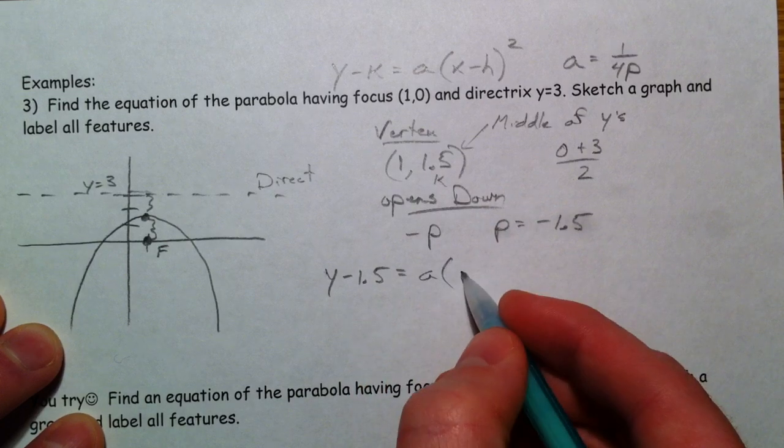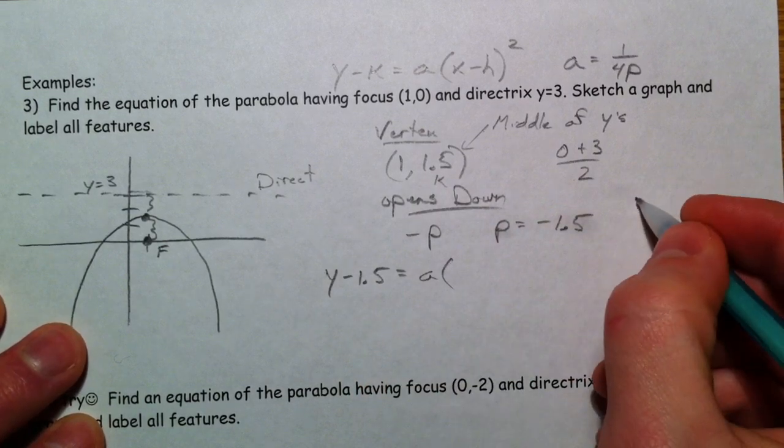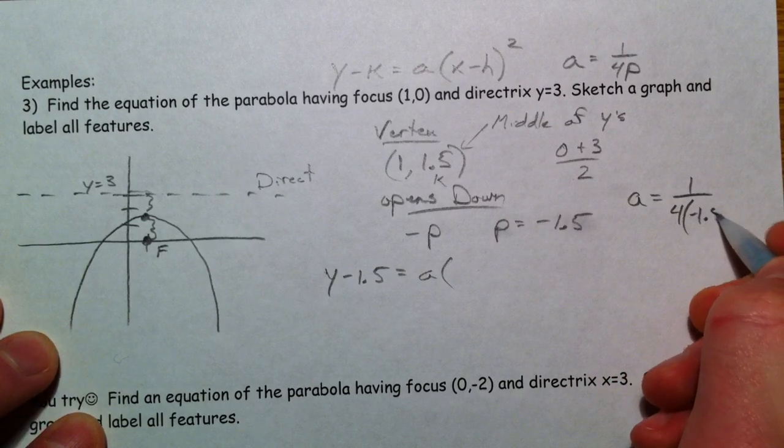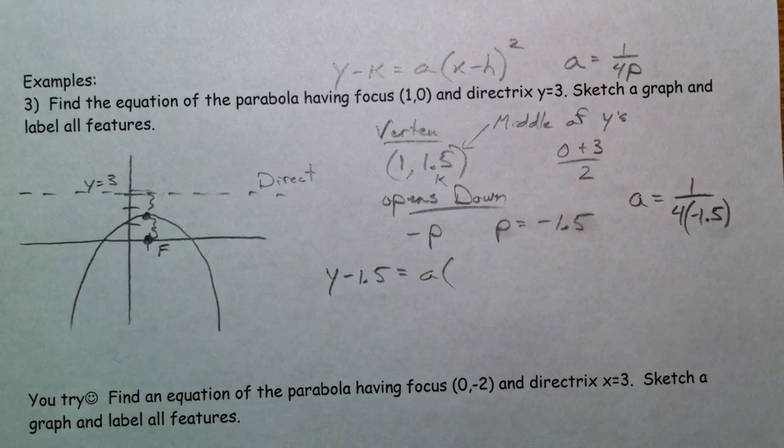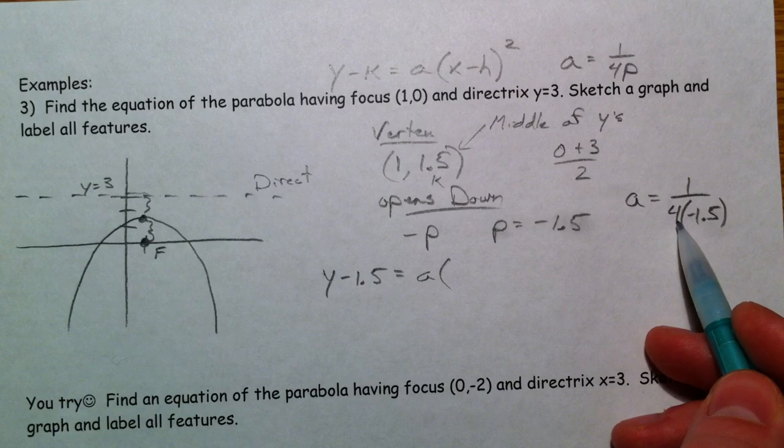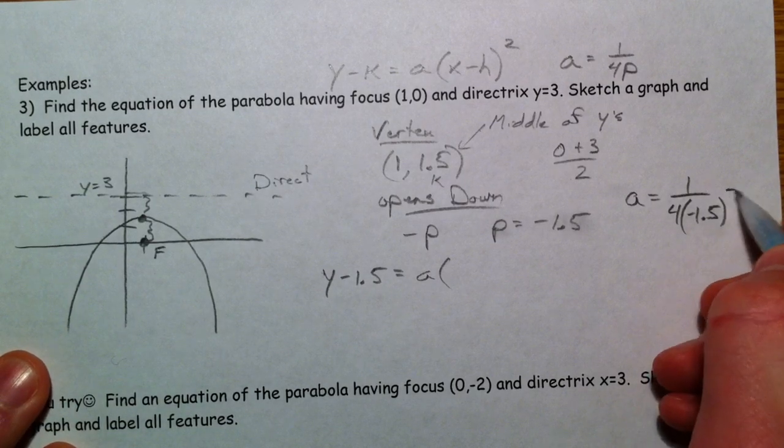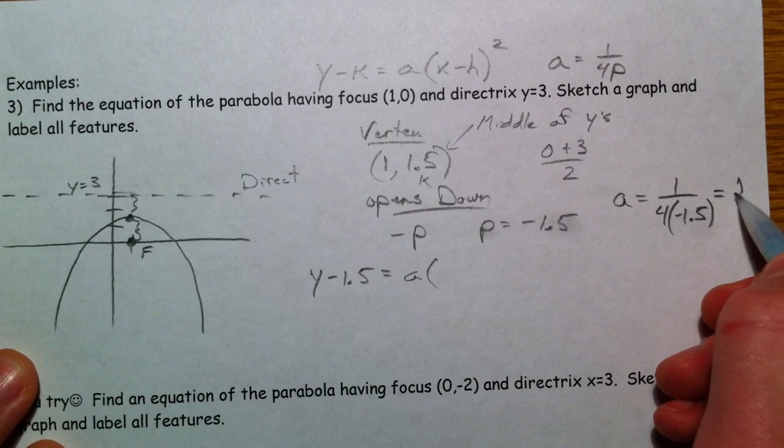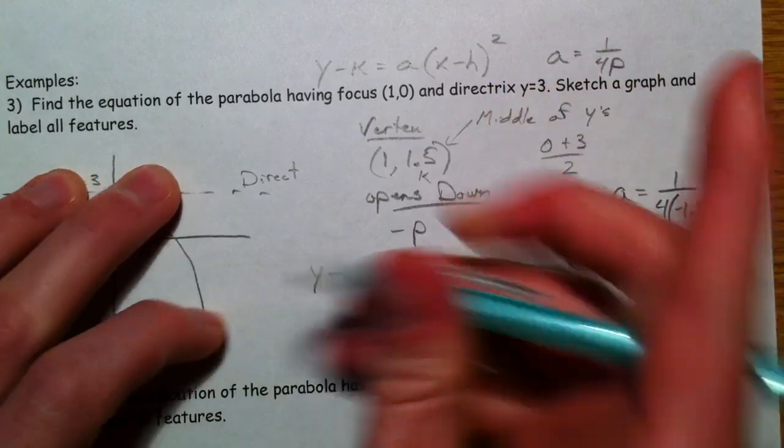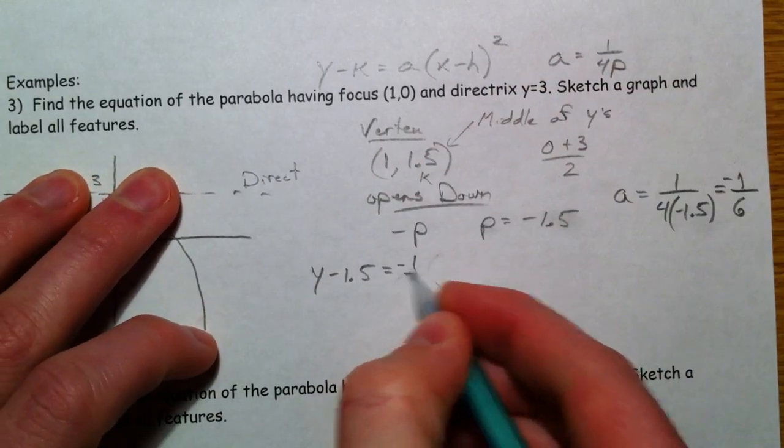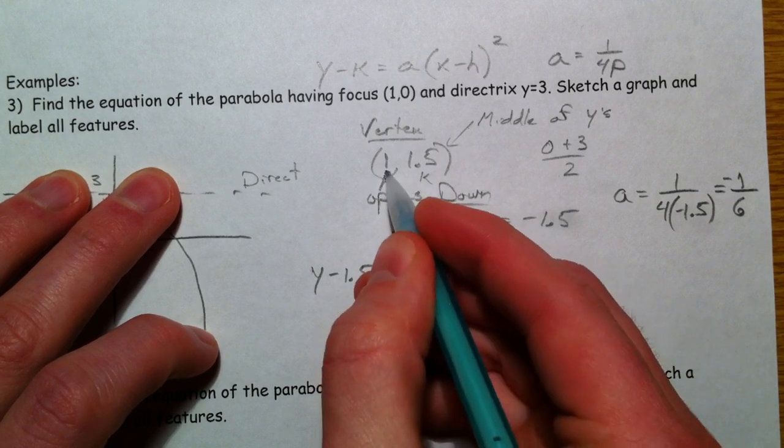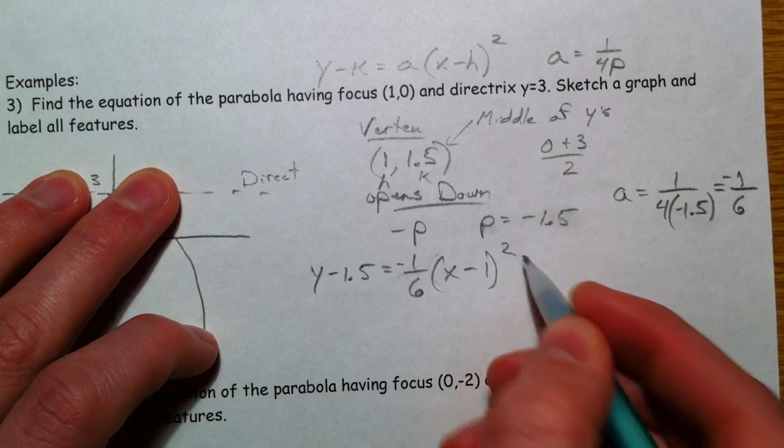Equals a times—and actually let's figure out what a is. a is equal to 1 over 4 times negative 1.5. Negative 1.5 times 4, if you multiply by 2, you get 3. Double that again, you get 6. So negative 1/6 times x minus our h, which is the x-coordinate of our vertex, 1 squared.